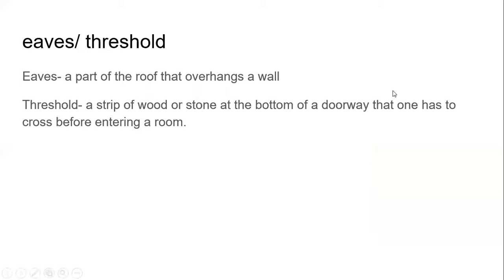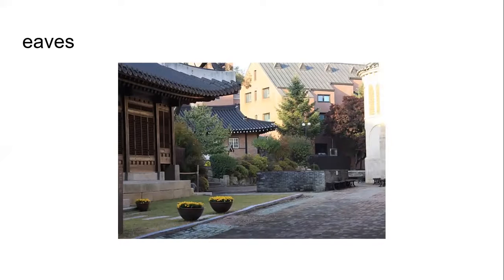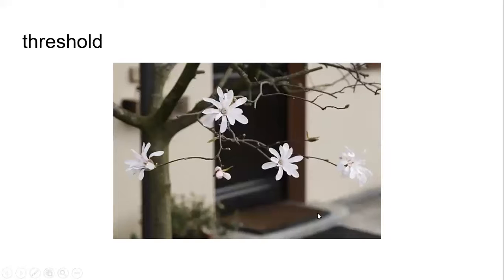What about eaves and threshold? Eaves is the part of the roof that overhangs a wall. You must have heard the term eavesdropper — someone who stands under the eaves and listens to people's conversations. Threshold is a strip of wood or stone at the bottom of a doorway that one has to cross before entering the room. These are the eaves, and if you stand here and listen to someone's conversation, you would be an eavesdropper. And this here is the threshold.